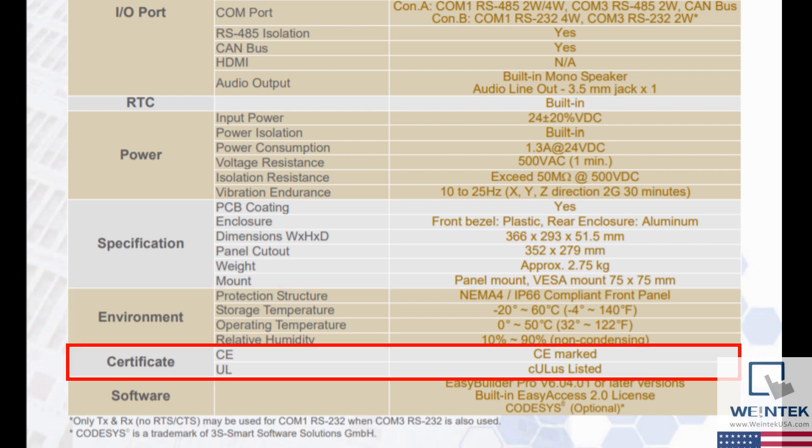Next is the certification section. This section will show all certifications that the device qualifies for. The 3152X has two certifications, the first being CE. This certifies that the product complies with European health, safety, and environmental requirements to ensure consumer safety. The second certification is the UL or CULUS listing. This shows that the product has been tested by Underwriters Laboratories to meet safety standards of the United States as well as Canada.